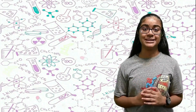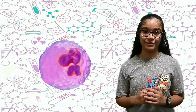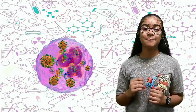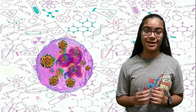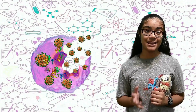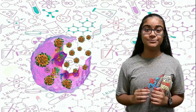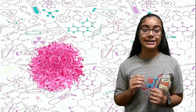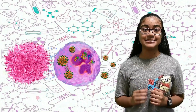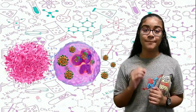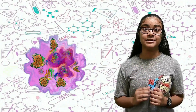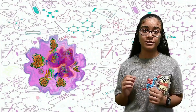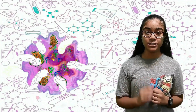If the measles virus infected a macrophage, the cell would continuously make more measles viruses until it either died by lysis — which means the cell bursts — or a natural killer cell sends a chemical message that commands the cell to commit suicide through a process known as apoptosis.